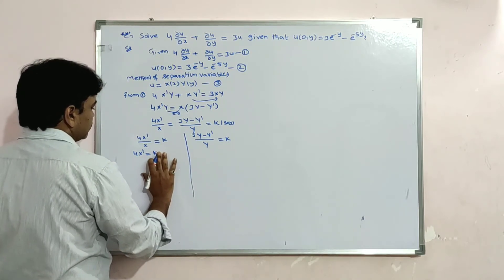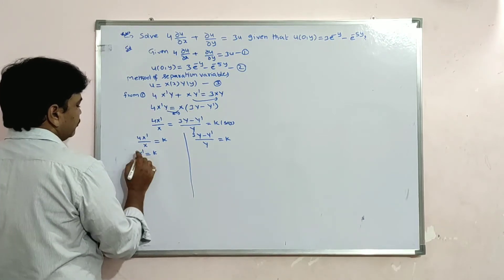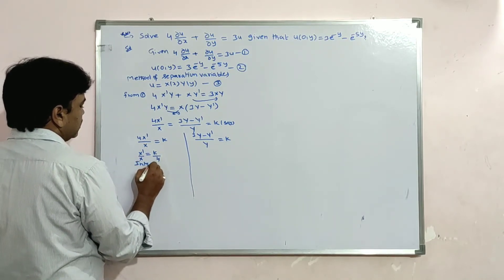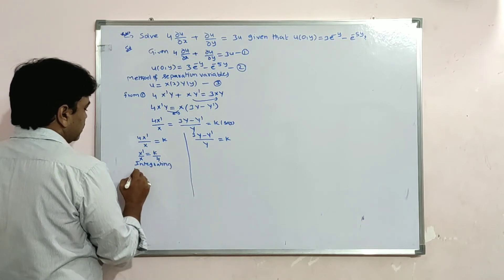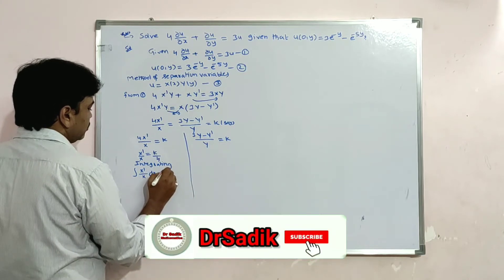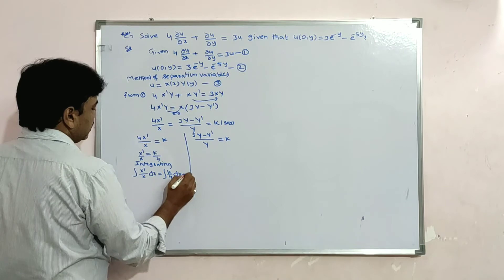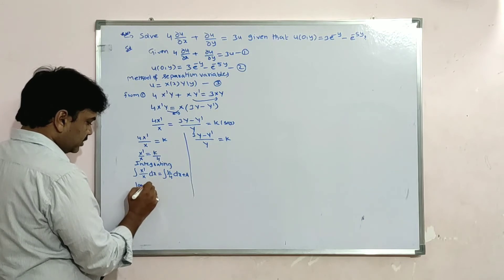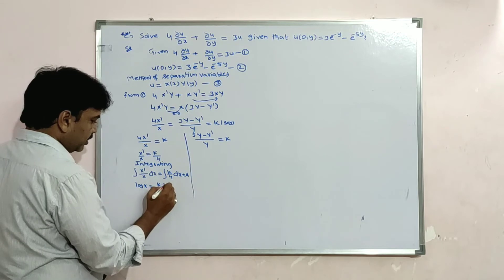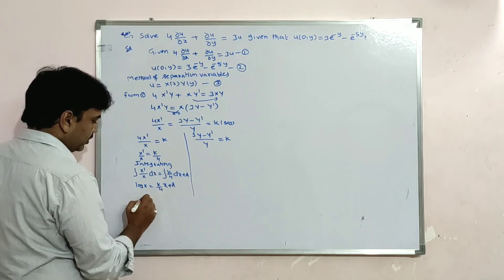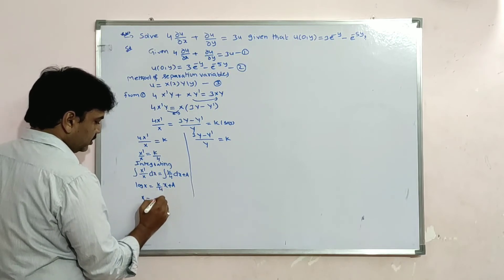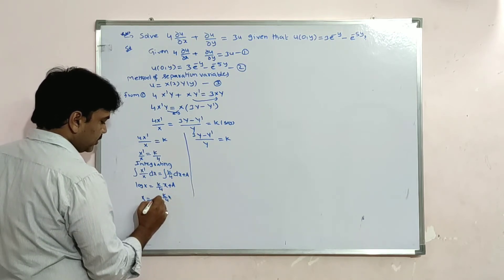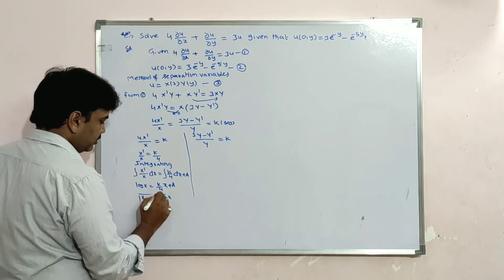For the X equation, dividing by 4: X'/X = k/4. Integrating: ∫(X'/X)dx = ∫(k/4)dx + a. This gives log(X) = (k/4)·x + a, therefore X = e^(kx/4)·e^a = B·e^(kx/4), where B = e^a.